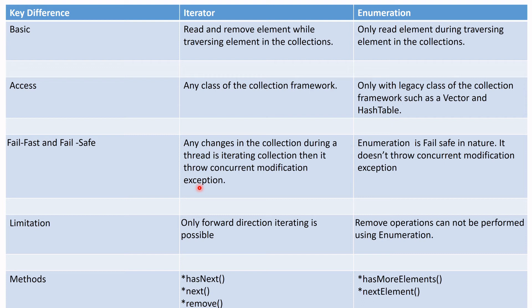Based on these things we can differentiate Iterator and Enumeration. From the basics: with Iterator, we can read and remove the element while traversing the collection. But with Enumeration, we can only read the element while traversing the collection. So this is the major difference — Enumeration can only read, but Iterator can both read and remove.